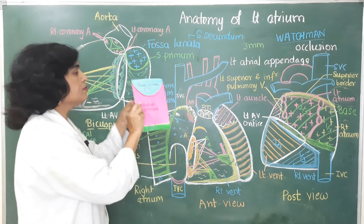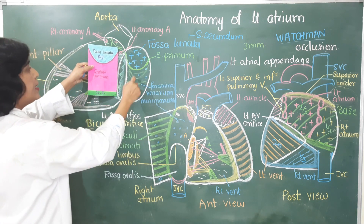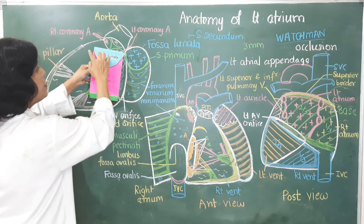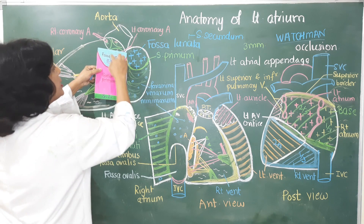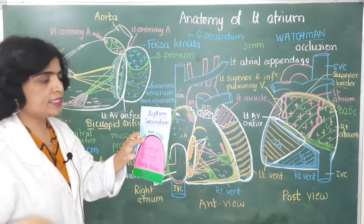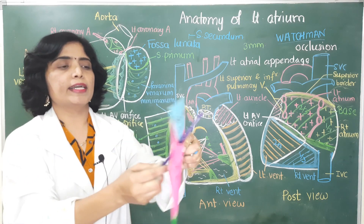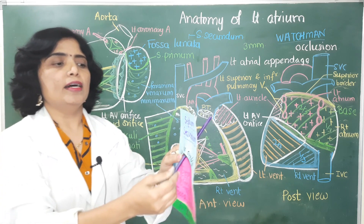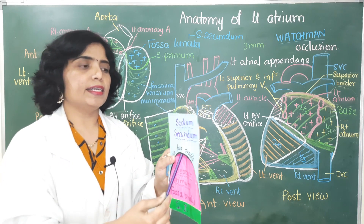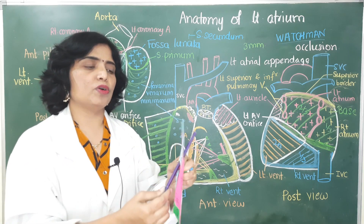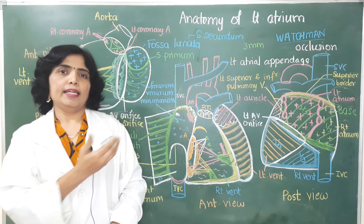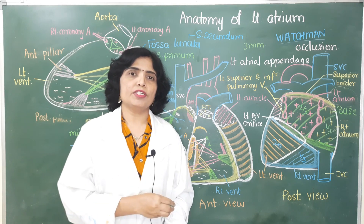Viewing the interatrial septum from the left side, the semilunar fold represents the upper free margin of septum primum, and the floor of the fossa lunata is formed by septum secundum. Between the septum primum and septum secundum there is a valvular gap directed upwards and to the left, called the foramen ovale. This is patent in approximately 25% of cases, known as probe patency of the foramen ovale.